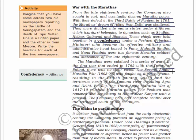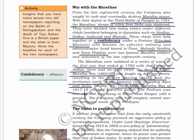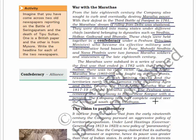Finally, the third Anglo-Maratha war of 1817-1819 crushed the Maratha power and the Peshwa was removed and sent away to Bithur near Kanpur with a pension. The company now had complete control over the territories south of the Vindhyas. First they had captured Bengal, then Hyderabad, then Mysore, and now the Marathas.